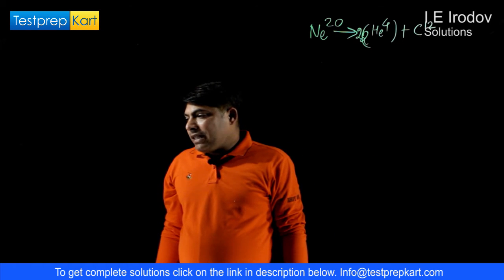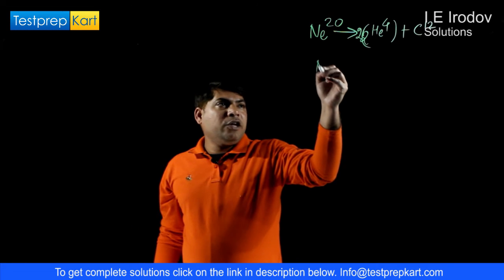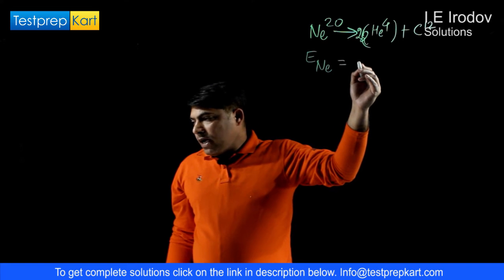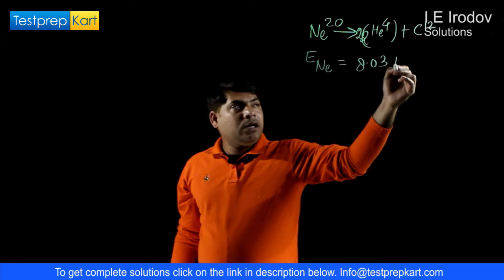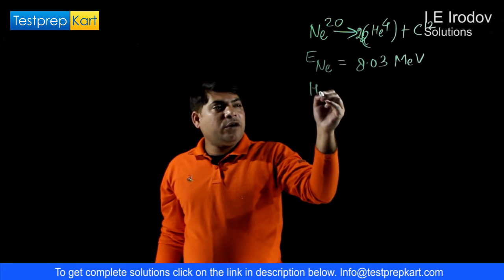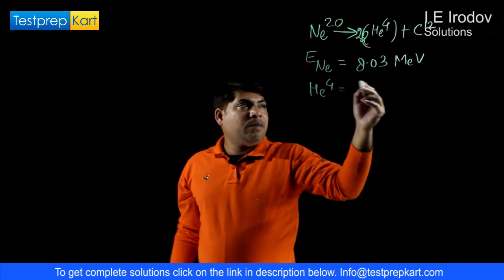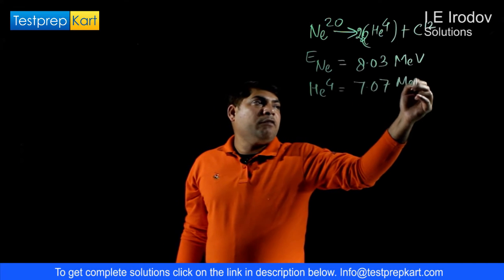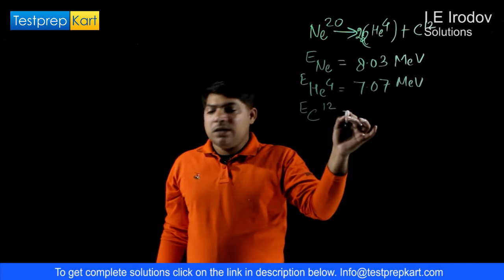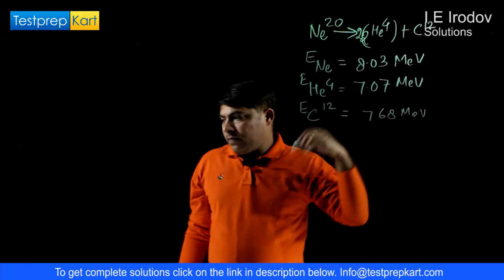If it is known that the binding energy per nucleon for Neon is given as 8.03 MeV, and binding energy per nucleon for helium or alpha particle is 7.07 MeV, and for Carbon-12 nucleus this energy equals 7.68 MeV.